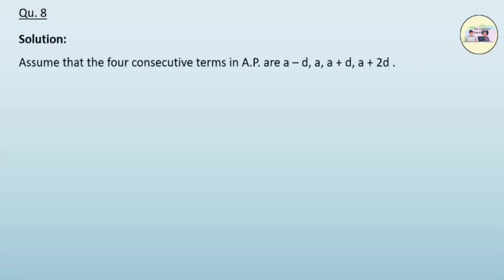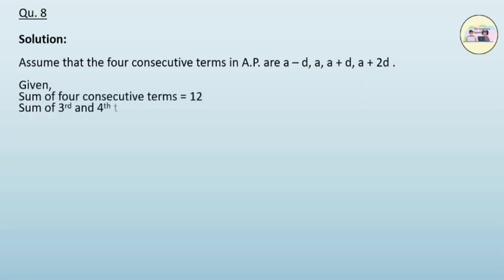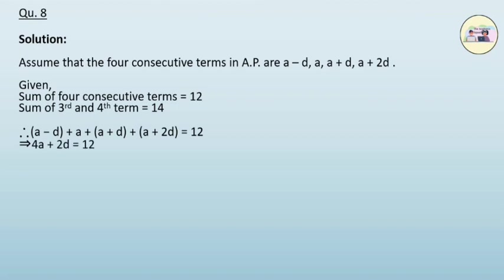Question 8. Find four consecutive terms in an AP whose sum is 12 and the sum of the third and fourth terms is 14. Solution. Assume the four consecutive terms are a−d, a, a+d, and a+2d. It is given that the sum of four consecutive terms is 12. Therefore, (a−d) + a + (a+d) + (a+2d) = 12, and after solving we get equation 1: 2a = 6 − d.